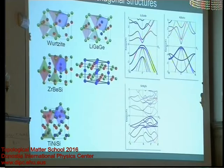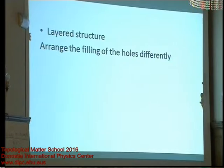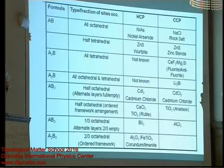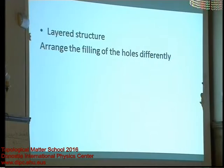We need band structures, but now I want to talk about layered structures — also because there is interest in 2D superconductors and 2D materials generally. The layered structure is very often motivated by filling holes differently. The motivation for layered structures is very often that we have a lead compound which has a lone pair — then the lone pair already fills one position and the compound becomes a layered structure.